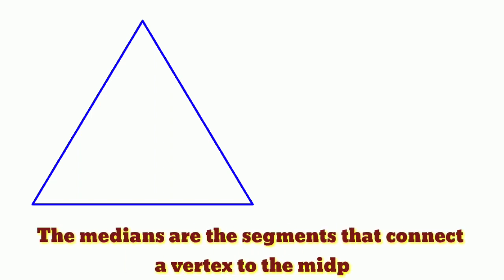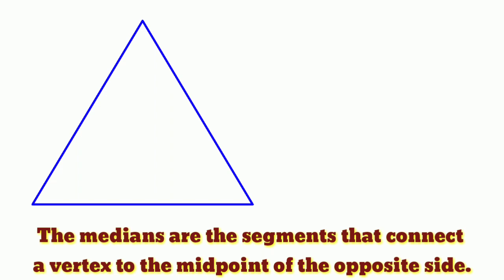Medians: the segments that connect a vertex to the midpoint of the opposite side of the triangle are called medians. We will find three medians in every triangle.